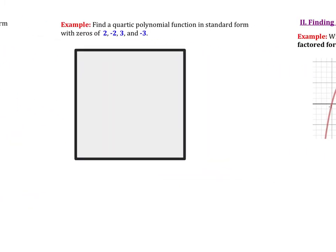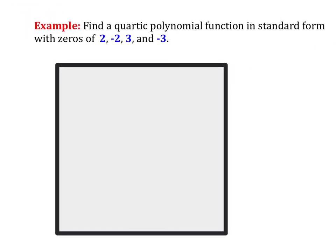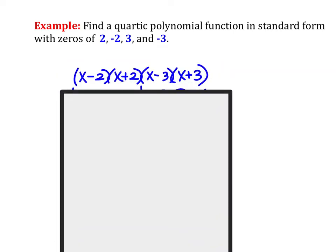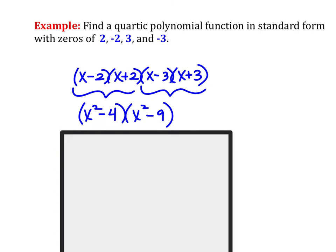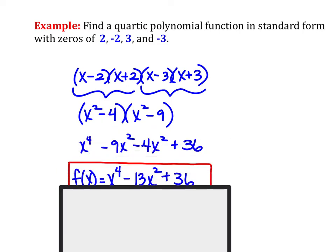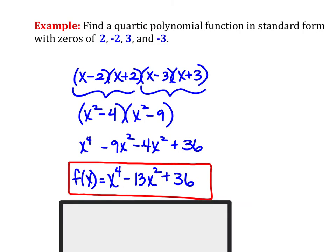Let's do one more and call it a day. Here we have four x-intercepts, which means we're going to have four factors. I'm noticing we've got conjugate pairs showing up, so that indicates a difference of squares pattern. Here's another set of conjugate pairs — so another difference of squares pattern. I'm going to multiply each one of those conjugate pair sets together first. Once I have this, I'll FOIL it out: x squared times x squared, x squared times negative 9, negative 4 times x squared, and negative 4 times negative 9. After like terms have been combined in the middle, our final answer will be x to the fourth minus 13x squared plus 36.